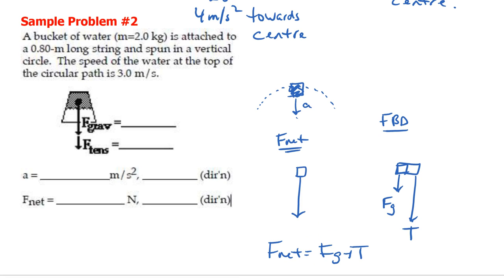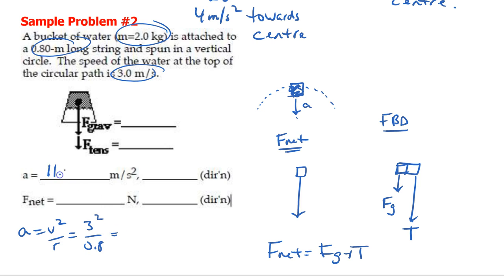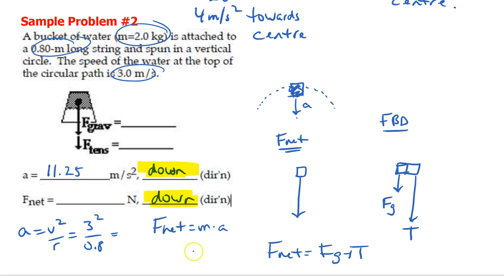We have the mass, radius, and speed. The acceleration equals v²/r = 3² / 0.8 = 9/0.8 = 11.25 meters per second squared, directed downward. Since the direction of acceleration and net force are always the same, F_net is also downward. F_net = ma = 2 × 11.25 = 22.5 newtons downwards.